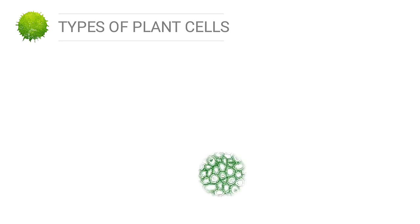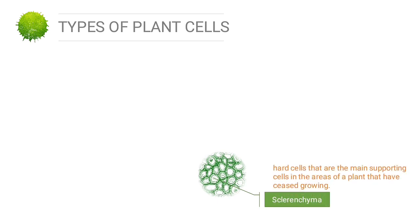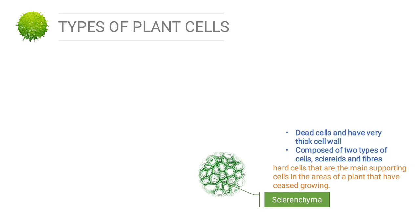The next type of plant cell is sclerenchyme. Sclerenchyme cells are the main supporting cells in areas of the plant that have ceased growing. Sclerenchyme cells are dead and have very thick cell walls composed of two types: cells with thickened lignified secondary walls laid down inside the primary cell wall.